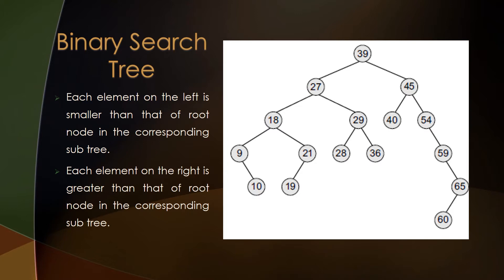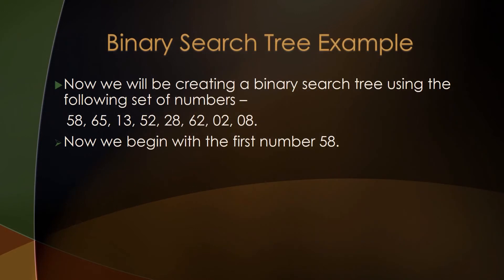While constructing a binary search tree, you must always remember this property. Now an example will help you understand the construction of a binary search tree from a given set of data. The numbers are: 58, 65, 13, 52, 28, 62, 2, and 8. Always remember the first element in a set of data will always be the root node.